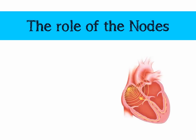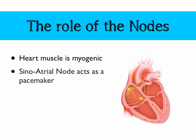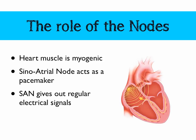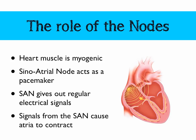We mentioned the nodes earlier. In your heart, you've got two main nodes responsible for keeping the cardiac cycle running correctly. Heart tissue is myogenic, which means it will contract — it will make small muscular twitches of its own accord. The sinoatrial node acts as a pacemaker; it controls those twitches and makes sure the heart is beating at a constant, regular rate. This can be controlled by your brain if you need to increase or decrease your heart rate, but generally it's good to have a heart that pretty much runs itself. The sinoatrial node gives out regular electrical signals — it's shown on the diagram with radar lines coming out of it, located at the top of the right atrium — and those signals cause the atria to contract.